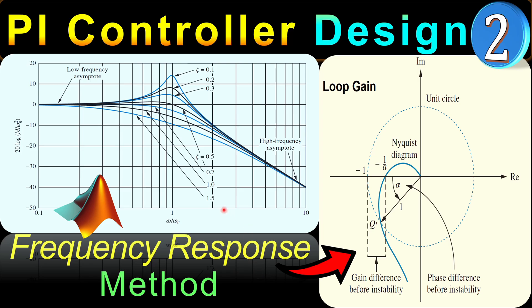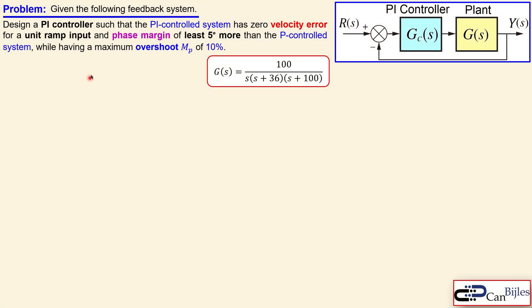We will of course step by step work out the calculations and also verify these in MATLAB simulations. So let's look at our example. We have the following feedback system given. We have the PI controller here and we have the plant in the unity gain feedback configuration. The plant transfer function is shown here, which is a third order system.